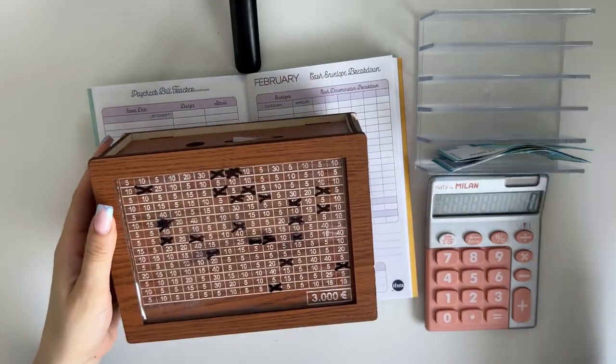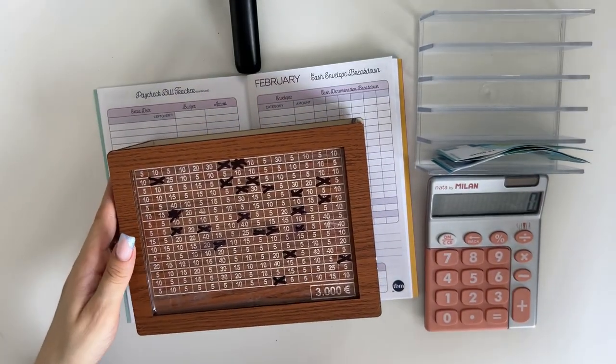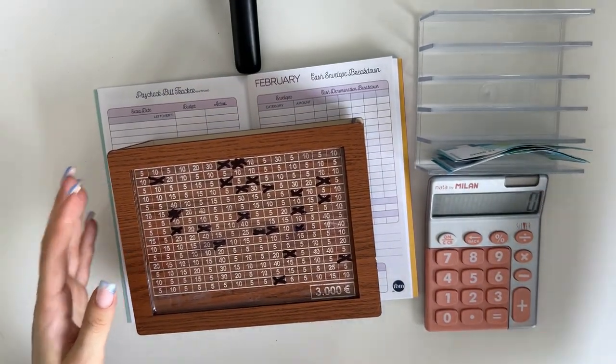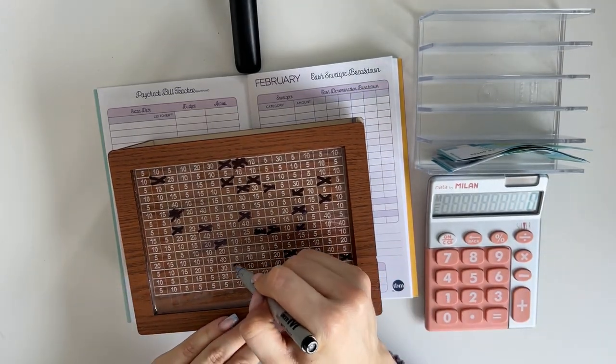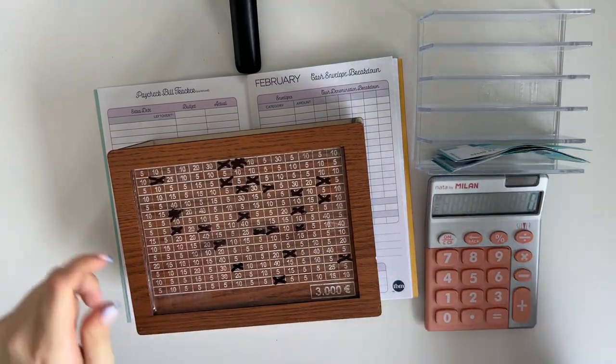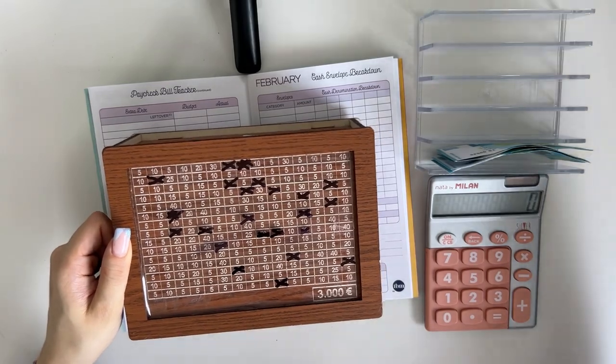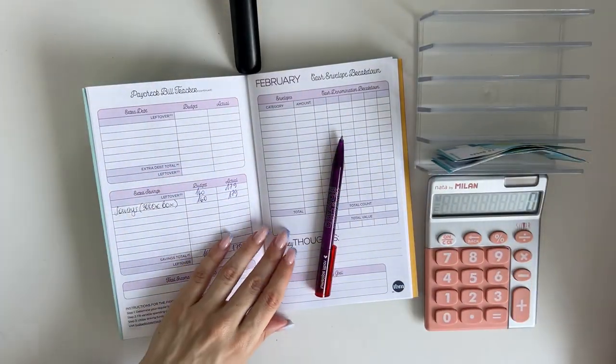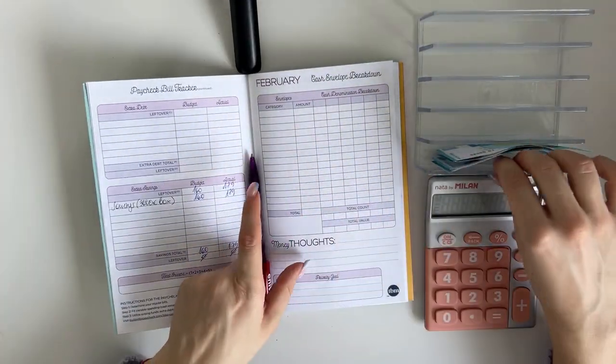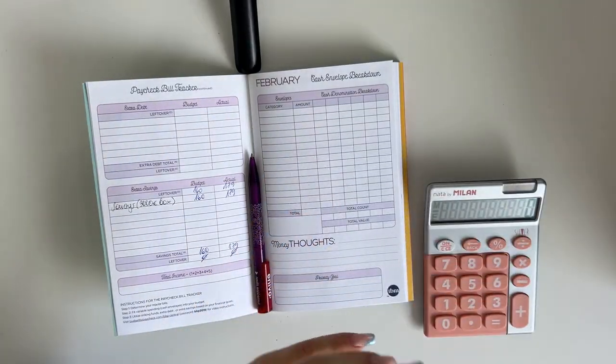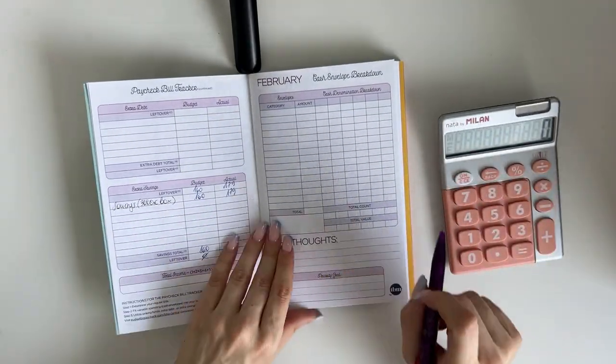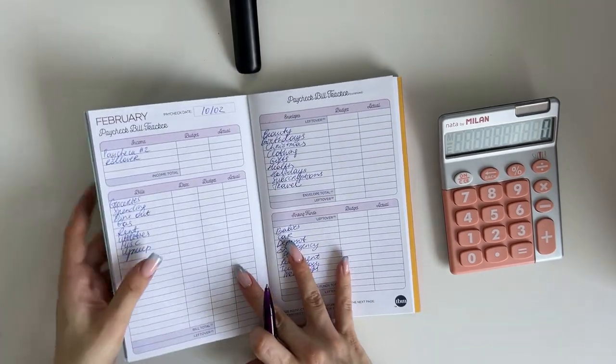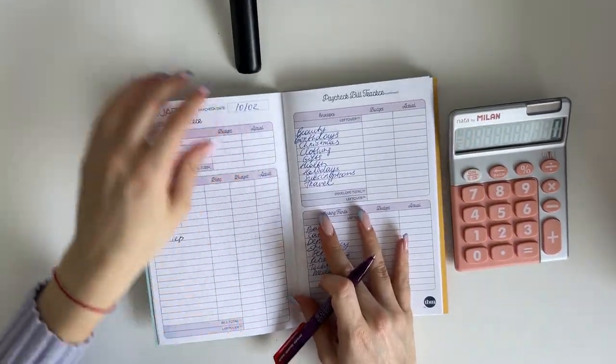Whenever we have a bigger amount to stuff in, I'm gonna stuff these as well. But today we're adding 175. Where's my marker? All the markers are falling. 175, this one, perfect. So that's what the box is looking like right now.